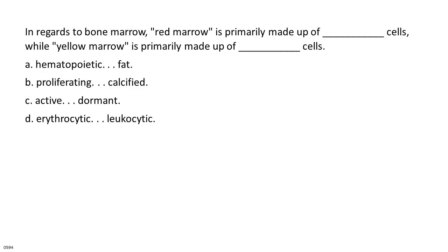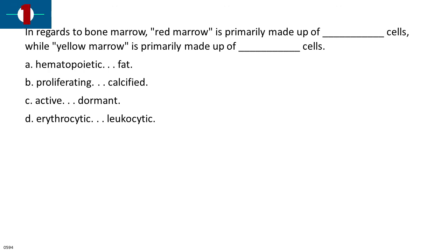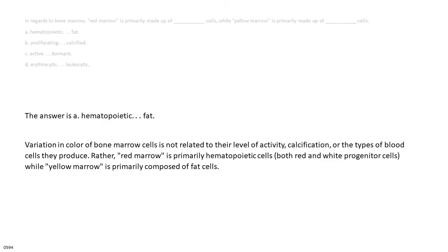In regards to bone marrow, red marrow is primarily made up of ___ cells, while yellow marrow is primarily made up of ___ cells. A. Hematopoietic, fat. B. Proliferating, calcified. C. Active, dormant. D. Erythrocytic, leukocytic. The answer is A, hematopoietic and fat. Variation in color of bone marrow cells is not related to their level of activity, calcification, or the types of blood cells they produce. Rather, red marrow is primarily hematopoietic cells — both red and white progenitor cells — while yellow marrow is primarily composed of fat cells.